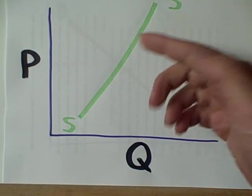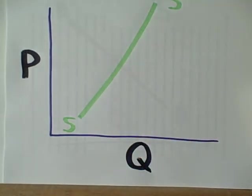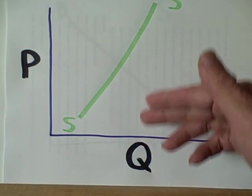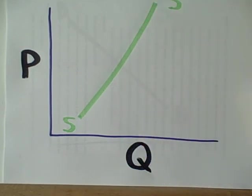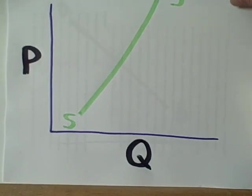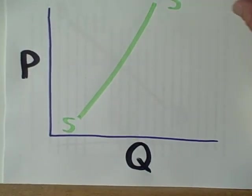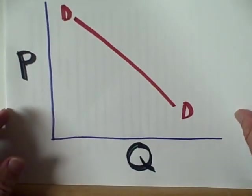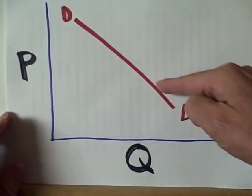In other words, as the price for a product increases, the amount that producers are willing to supply increases. Just as when the price gets higher, the amount that consumers demand tends to decrease.